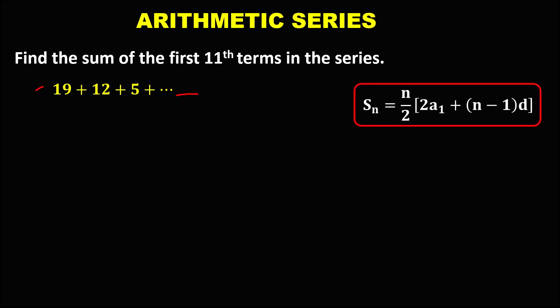So we're going to use this formula to find the sum of the arithmetic series. From the given and from this formula, we have n — that's the number of terms. Since we're looking for the sum of the first 11 terms, n equals 11. Then we have a sub 1, that's the first term, and the first term is 19, so a sub 1 equals positive 19.